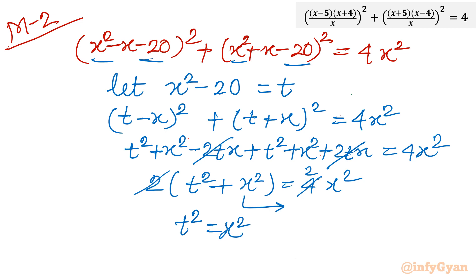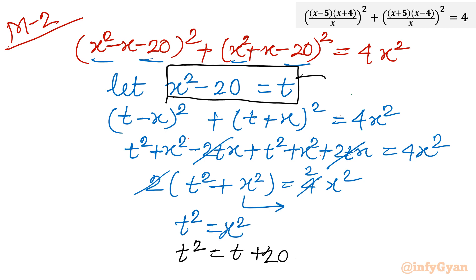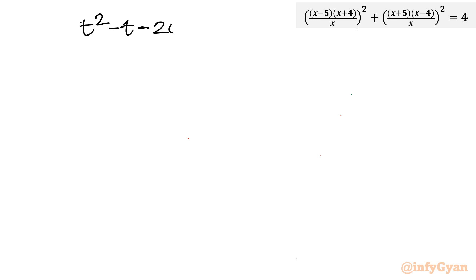Now substituting back: t equals x squared minus 20, and from t squared equals x squared, x squared equals t plus 20. So in place of x squared, we put t plus 20. This gives t squared equals t plus 20, which is a quadratic in t. Taking all terms to one side: t squared minus t minus 20 equals 0.